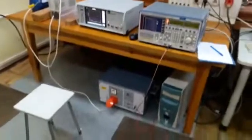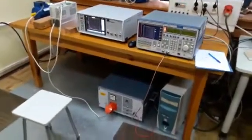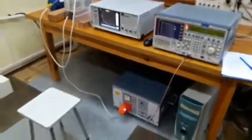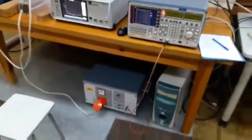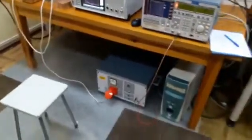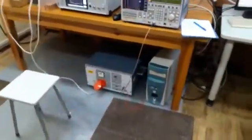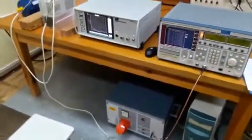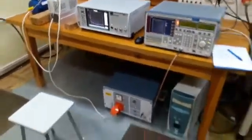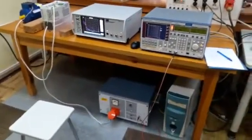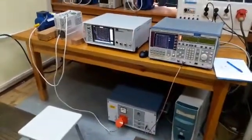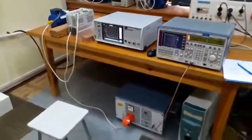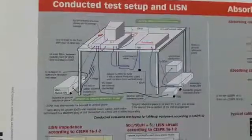Today we introduce EMI measurement using the LISN. LISN is the abbreviation of Line Impedance Stabilization Network, and this device is used to measure conducted electromagnetic interference in a circuit. I will show you how to do this test and what the specific requirements are.